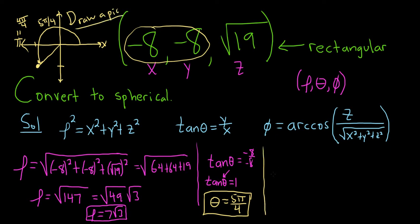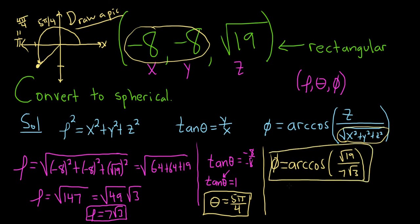The last piece is to find phi. So phi is equal to the arc cosine of z, which is the square root of 19, over this expression here. But we talked about this, this is just rho. So this is 7 square root of 3. And you can just leave it like that. That's perfectly okay. No problems there.